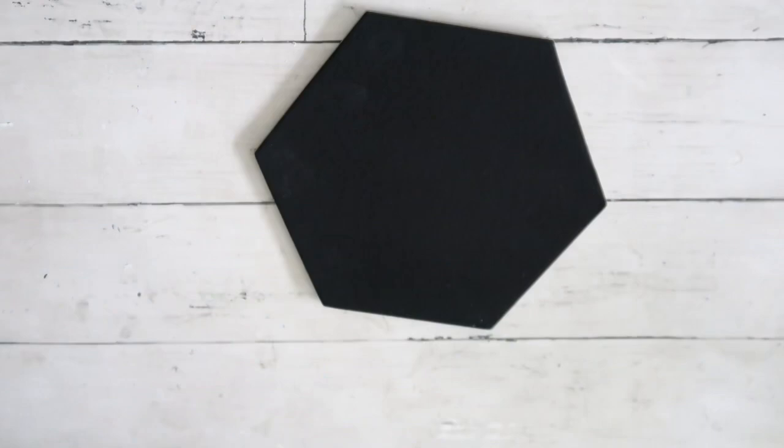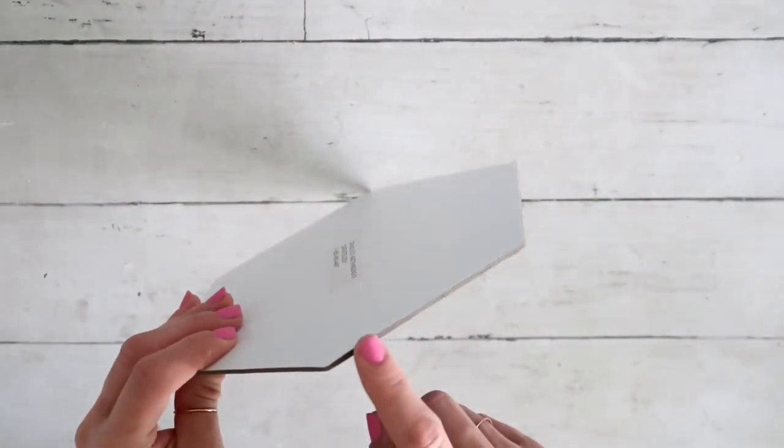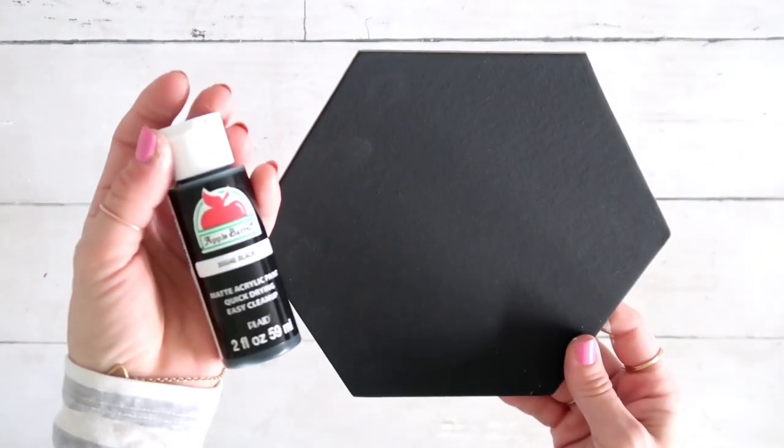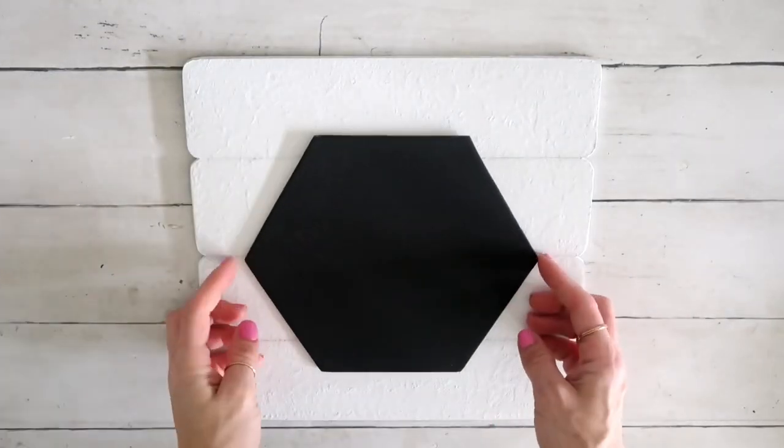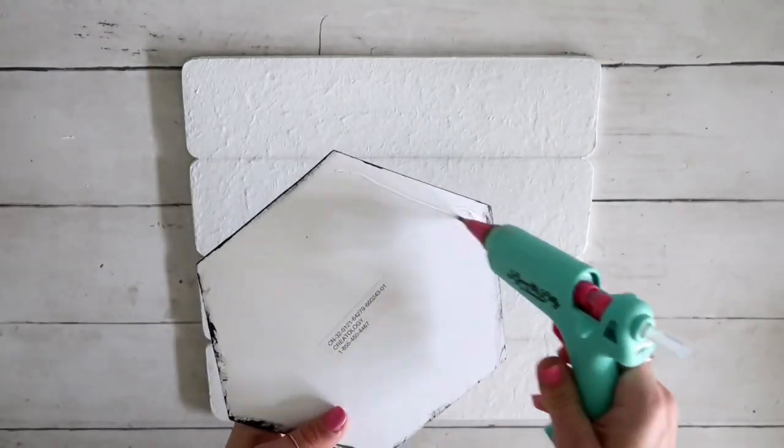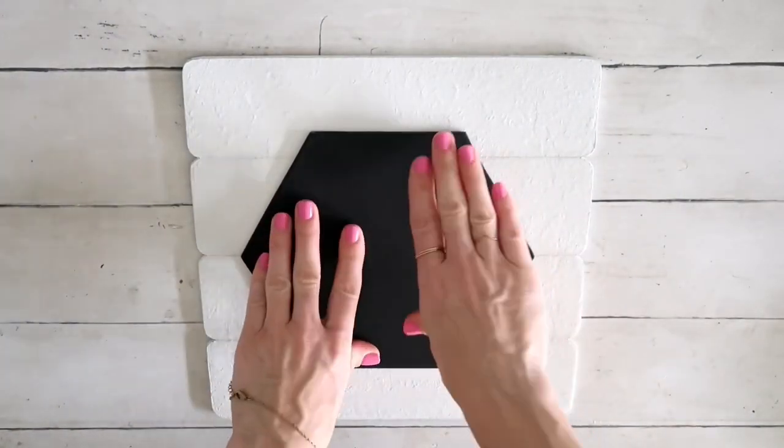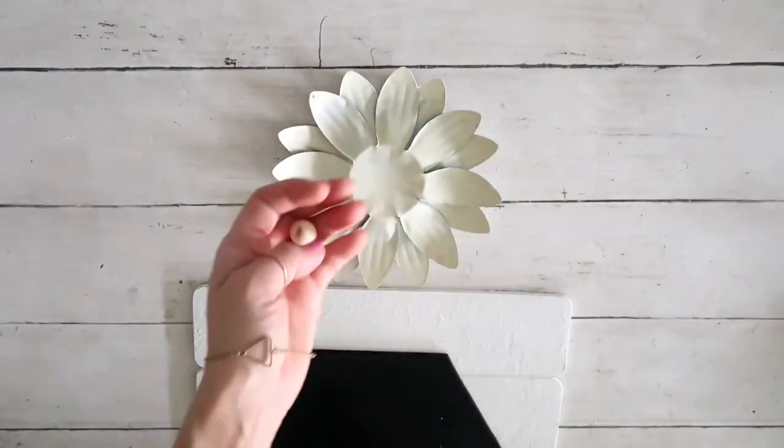Now I'm going to be taking this canvas in a hexagon shape. It comes in a package of two from Michael's for $2.99. I'm going to be also painting the sides in black color as well. Now I'm just attaching it right in the middle of this white sign with hot glue.